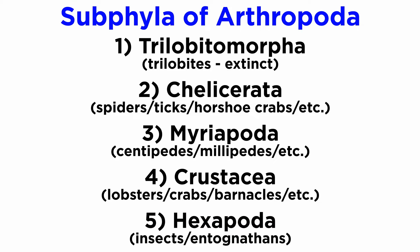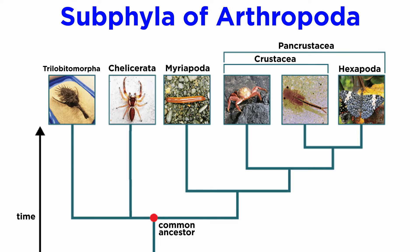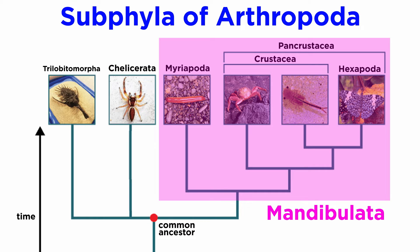There are some potential problems with these subphyla. The current consensus is that there are just two extant arthropod subphyla: Chelicerata, a sister taxon to all other arthropods, and Mandibulata, which includes Myriapoda and Pancrustacea.